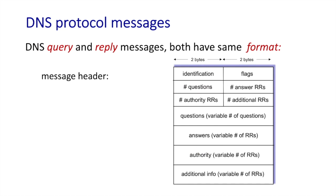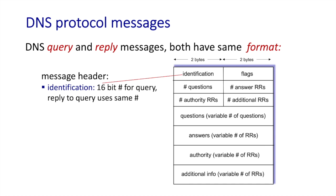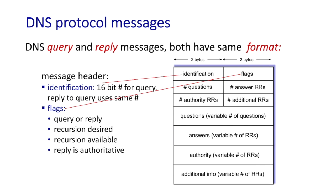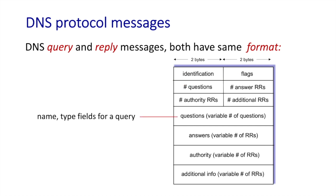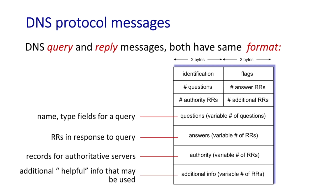Both the query and reply message have the same format. The ID field is a 16-bit number chosen by the querier; the reply takes the same ID to indicate it's a response to that particular query. The flag field indicates whether this is a query or reply, whether recursion is requested, and whether the reply is authoritative. The next four fields indicate the number of questions and responses. For a query, the host name goes in the question field; for a reply, a type A resource record containing the name and IP address is inserted in the answer field. RFC 1035 defines all these fields and resource records.